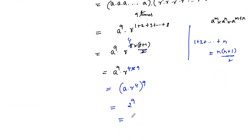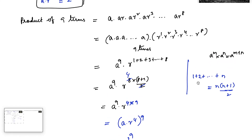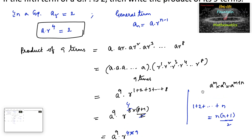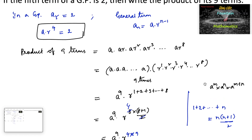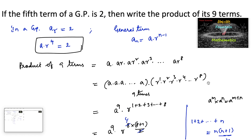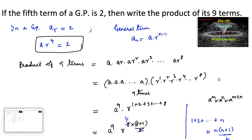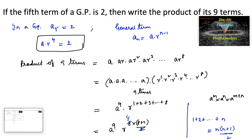So we can write ar to the power 4 as 2, giving us 2 to the power 9. The value of 2 to the power 9 is 512. Therefore, the product of the first 9 terms of a GP whose fifth term is 2 is 2 to the power 9, that is 512.